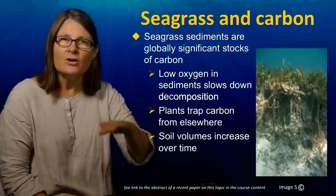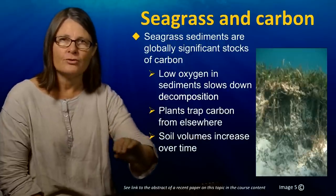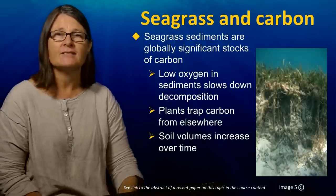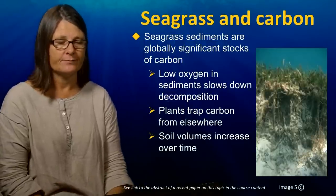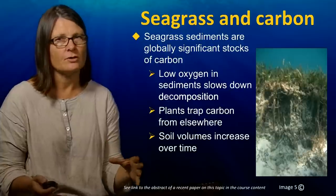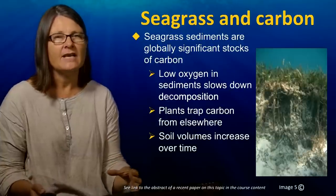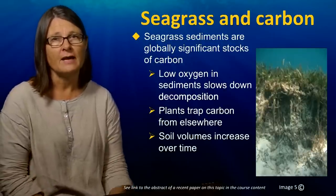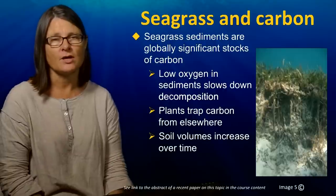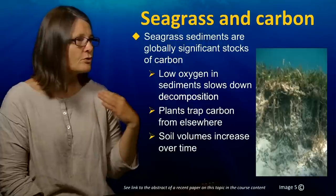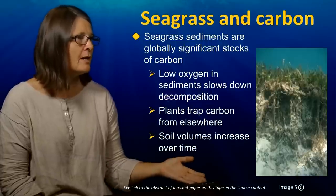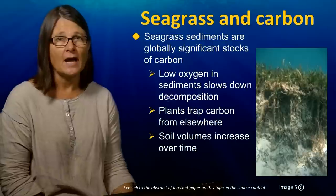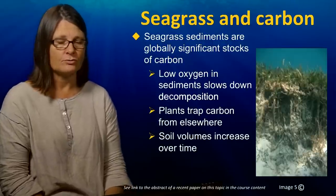Additionally, with the addition of sediments and root growth, the volume of seagrass sediments increases over time, so carbon is continually sequestered. Because of these huge carbon stocks within seagrass meadows, it is very prudent to conserve them in order to prevent emissions of carbon dioxide to the atmosphere. A link below points to a recent paper on carbon stocks within seagrass beds of the coastal zone.